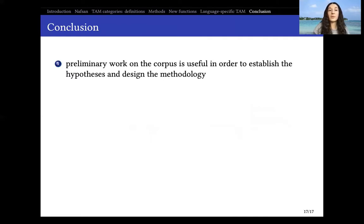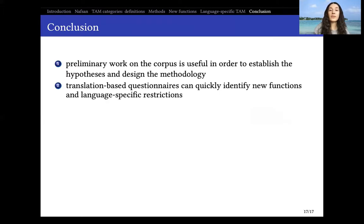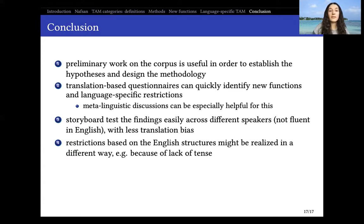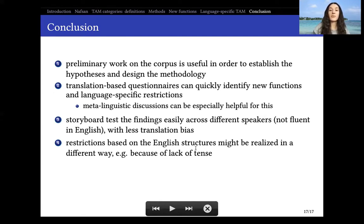To conclude: preliminary work on the corpus is useful for establishing hypotheses and designing methodology. Translation-based questionnaires can quickly identify new functions and language-specific restrictions, and metalinguistic discussions are very helpful in this case. Storyboards have the advantage that they can easily test across different speakers who might not be fluent in English, with less translation bias. We just have to be mindful when using storyboards or any materials based on English structures, because restrictions in English might be realized differently in a target language — for instance, the lack of tense in Nafsan means past perfect and present perfect are realized as the same category.